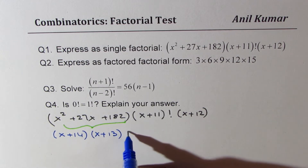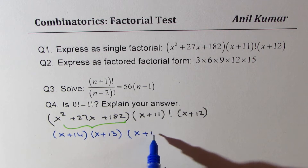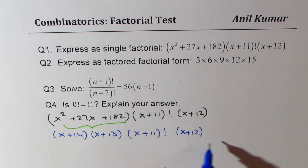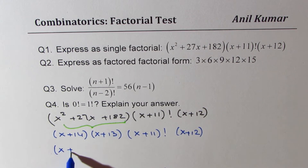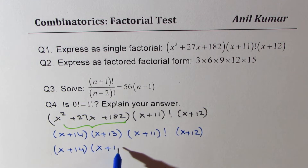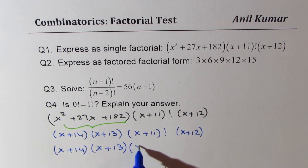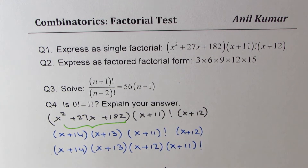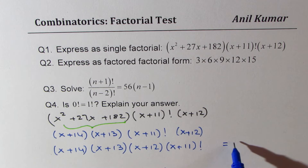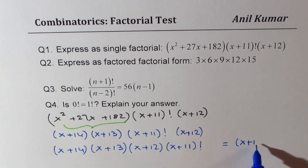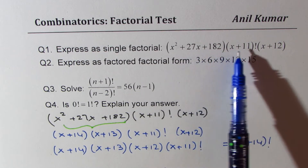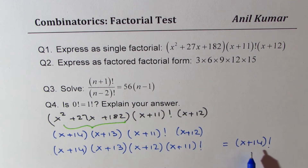Let me rearrange all these terms. We have x plus 11 factorial and x plus 12. Rearranging, we get x plus 14 times x plus 13 times x plus 12 times x plus 11 factorial. That could be written as x plus 14 factorial. That is how you express this particular term as a single factorial.